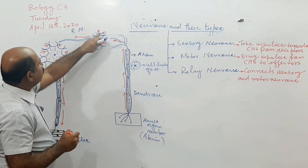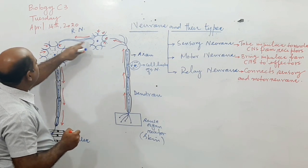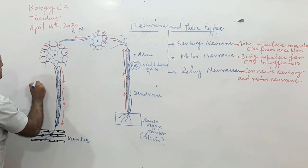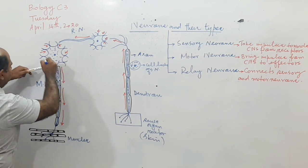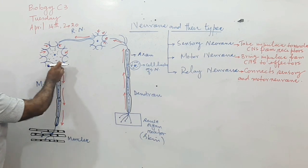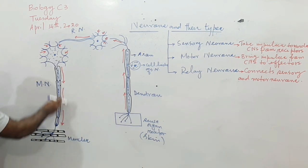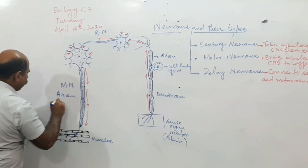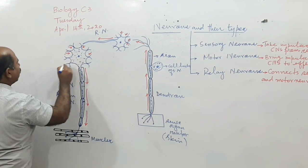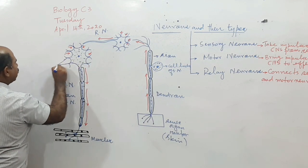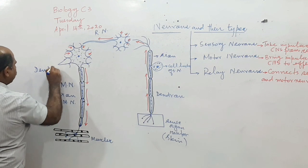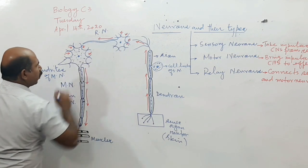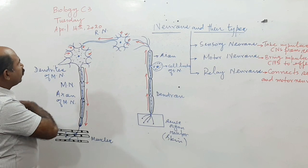This is the relay neuron — you can identify all its parts clearly: this is the cell body, these are the dendrites, and this one is the axon. This whole one is called the motor neuron. These are the dendrites of the motor neuron, there is the cell body, and since the message is going away from the cell body, this is called the axon of the motor neuron.